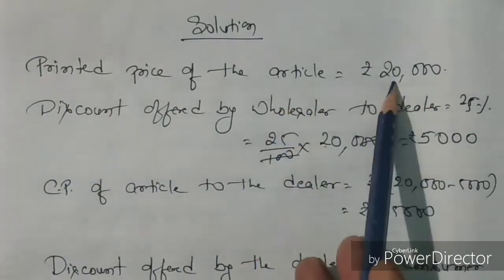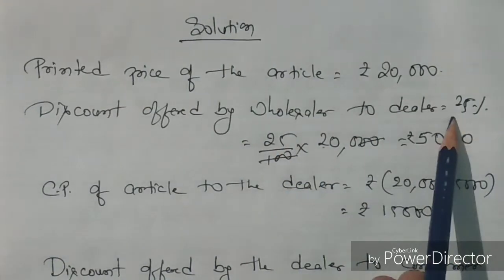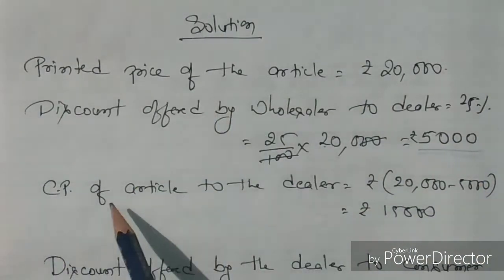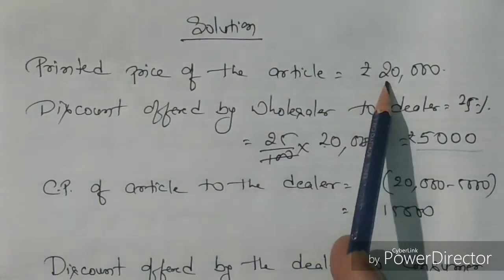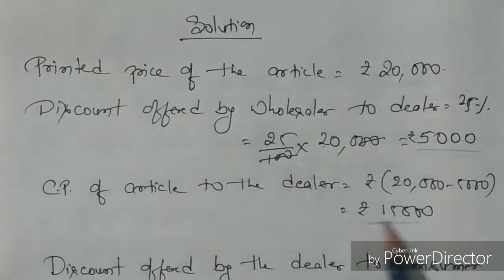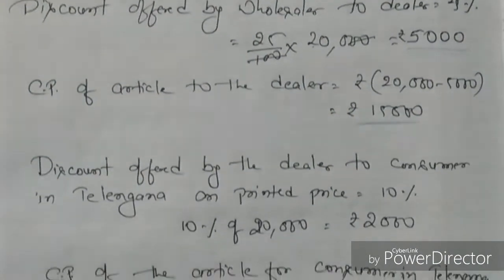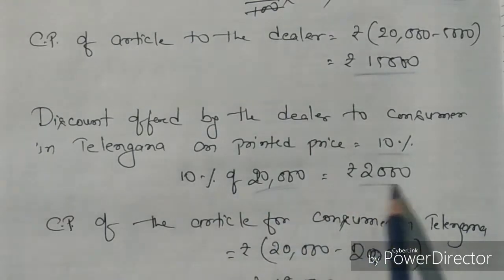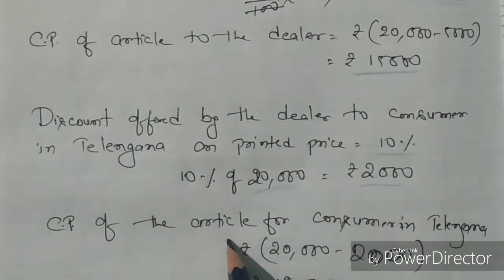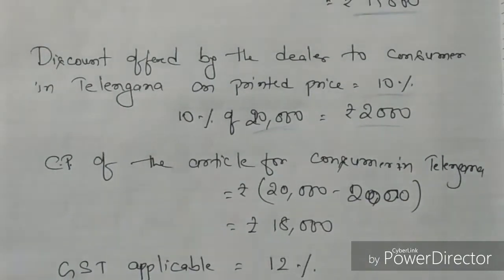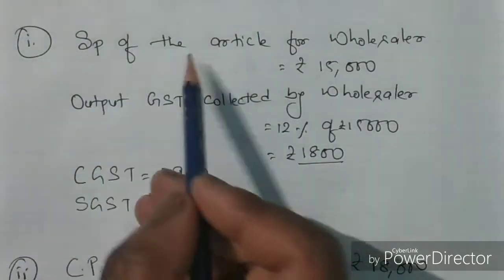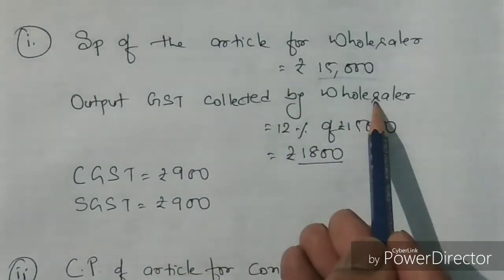The printed price of the article is 20,000. The discount offered by the wholesaler is 25%, so 25% of 20,000 is 5,000 rupees. This 5,000 is deducted, so the dealer's cost price — which was 20,000 — becomes 15,000 rupees after the 5,000 discount. Now the dealer offers the consumer a 10% discount, so 10% of 20,000 is 2,000, making the consumer's cost price 18,000. The GST applicable is 12%. So the SP of the article for the wholesaler is 15,000 rupees.